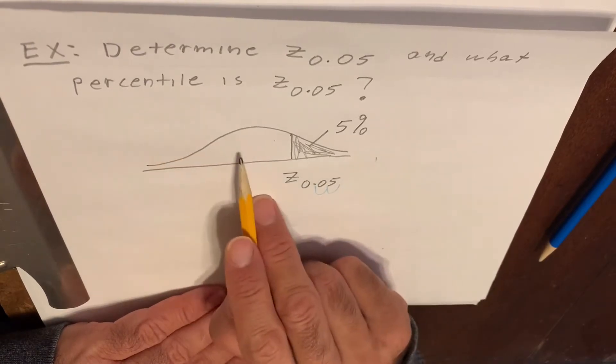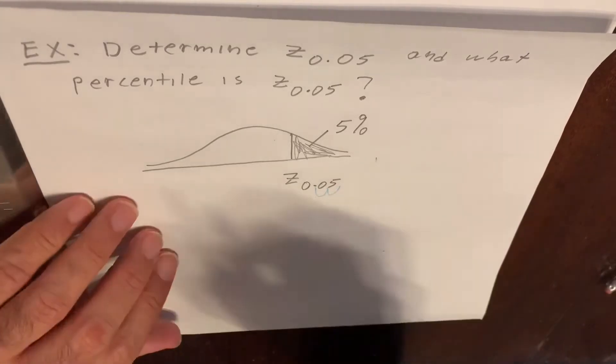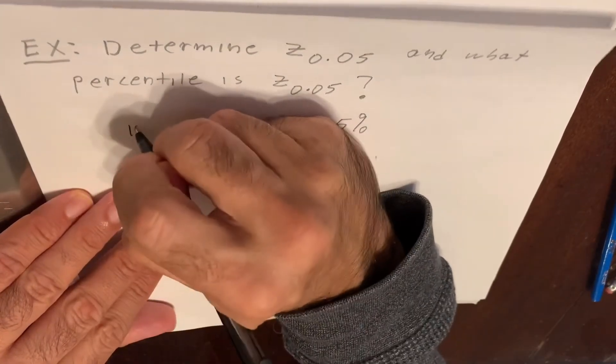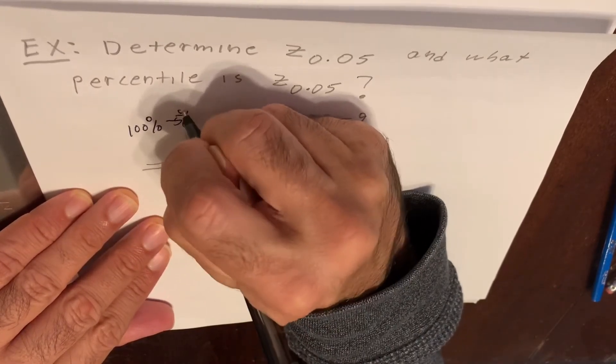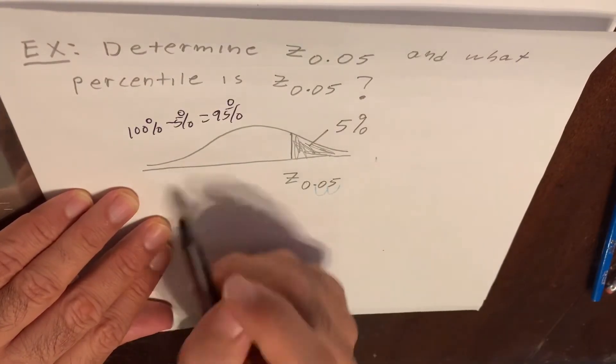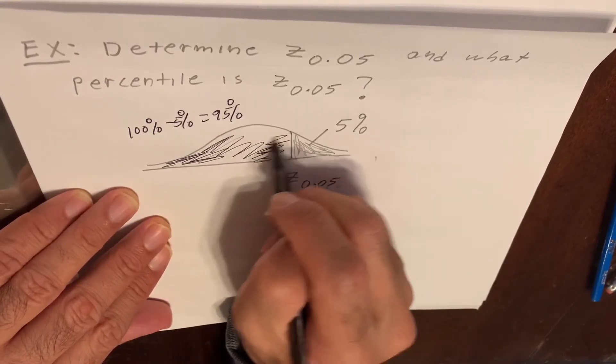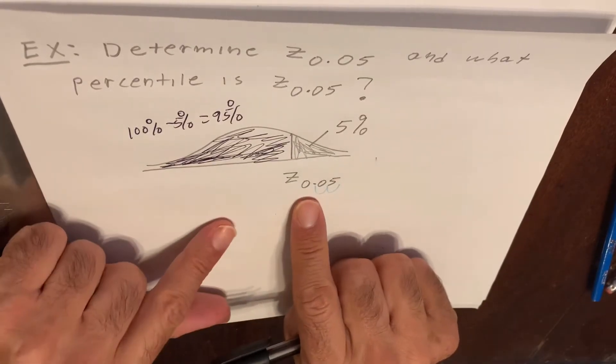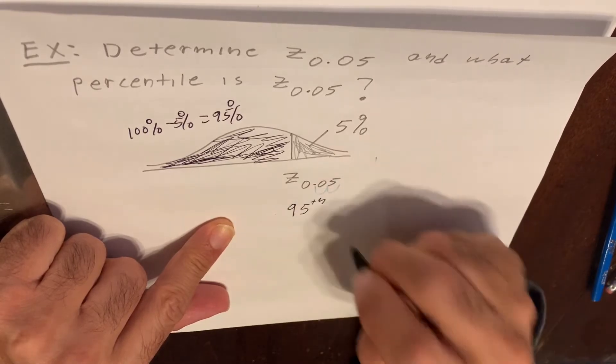But we have 100% minus 5% of the area to the left of the Z score, which of course is 95%. To the left of the Z score, we have 95% of the area. That makes this the 95th percentile.